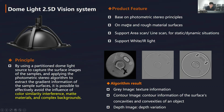This Dome Light 2.5 dimension system is mainly used on matte and rough material surfaces, and supports area scanning and line-scan modes for static and dynamic situations. It also supports white light and infrared light. This solution generates three different images: the first is the gray image, showing texture information; the second is the contour image, showing surface roughness information; and the third is the depth image, which is like a 3D image but without accurate height difference, used for defect detection.